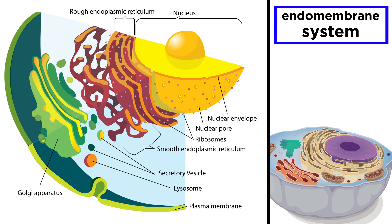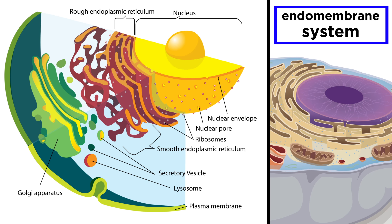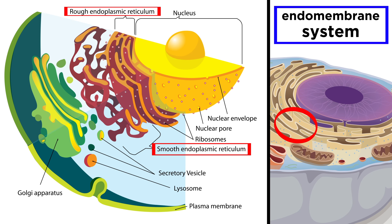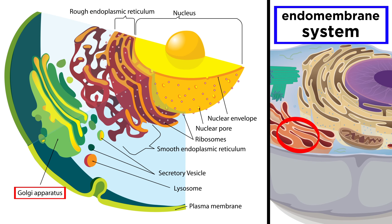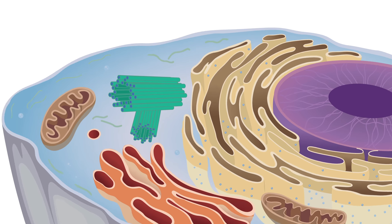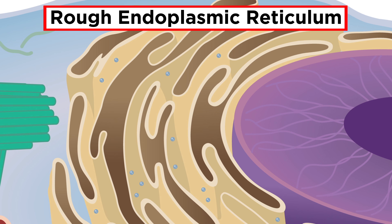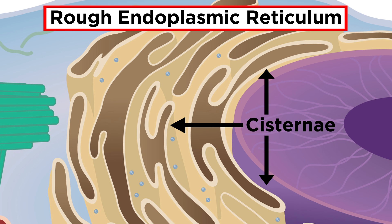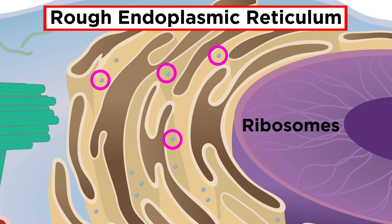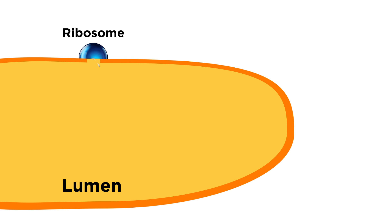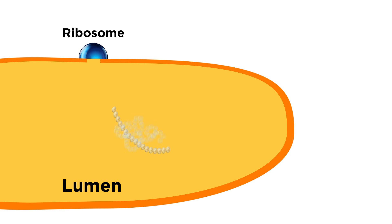Other components of the cell come together to make up the endomembrane system. This is a set of membrane-bound regions which consists of the nuclear envelope, the rough and smooth endoplasmic reticulum, Golgi apparatus, and lysosomes. The rough endoplasmic reticulum is a network of membranes that enclose the ER lumen, which is the stuff inside, consisting of sacs called cisternae. It's called the rough endoplasmic reticulum because its surface is studded with ribosomes, giving it a rough appearance. These ribosomes synthesize polypeptides that are inserted directly into the ER lumen.